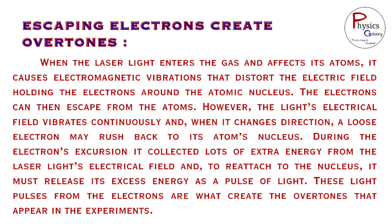Escaping electrons create overtones. When the laser light enters the gas and affects its atoms, it causes electromagnetic vibrations that distort the electric field holding the electrons around the atomic nucleus. The electrons can then escape from the atoms. However, the light's electrical field vibrates continuously and when it changes direction, a loose electron may rush back to its atom's nucleus. During the electron's excursion, it collected lots of extra energy from the laser light's electrical field and, to reattach to the nucleus, it must release its excess energy as a pulse of light. These light pulses from the electrons are what create the overtones that appear in the experiments.